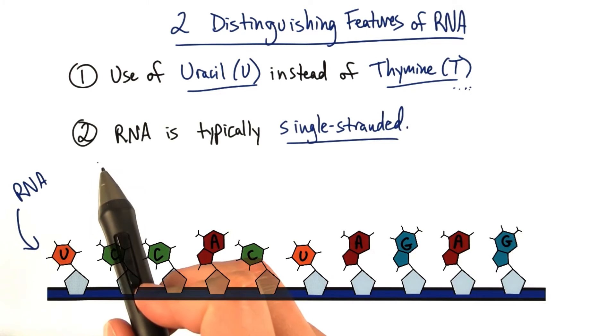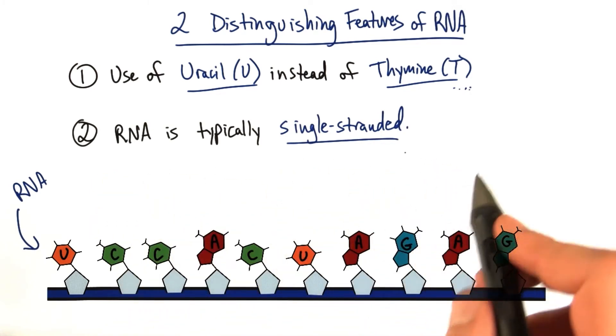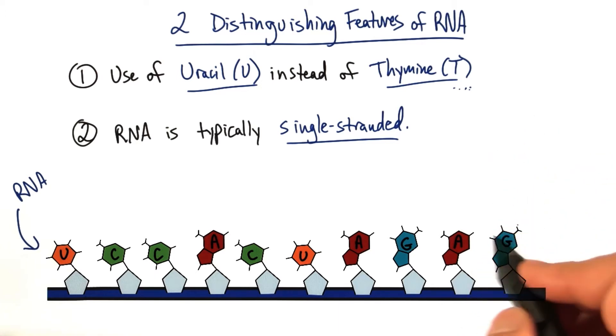The second distinguishing feature is that RNA is typically single-stranded, unlike DNA, which you normally see two strands in a helix together with each other.